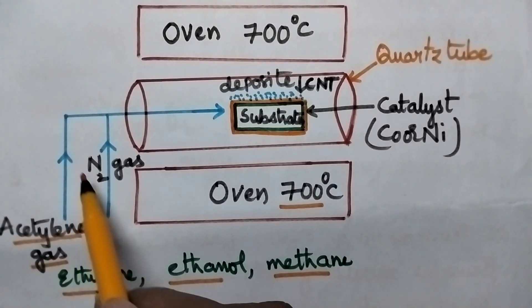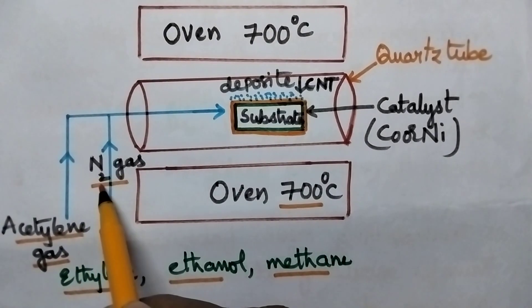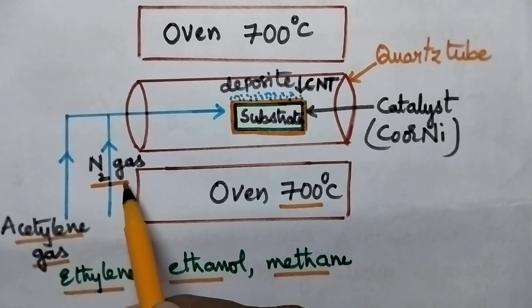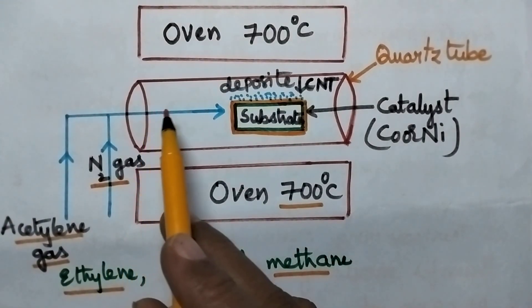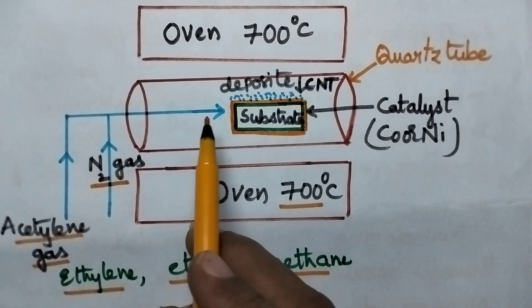Whenever acetylene gas along with nitrogen gas enters the system, what is the importance of nitrogen gas? It creates inert environment in the quartz tube.